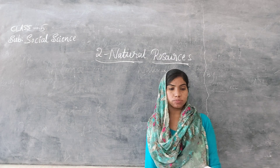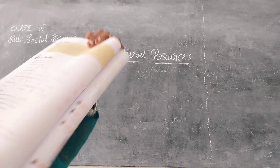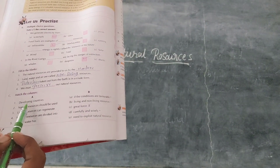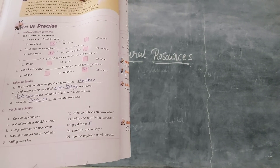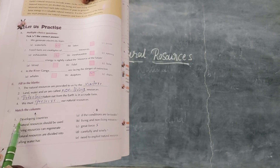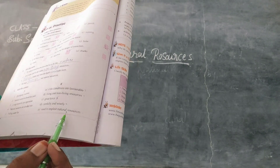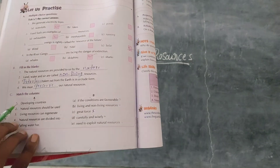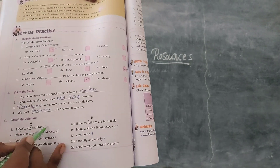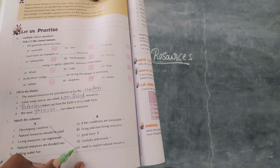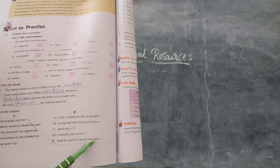Match the columns. Here they have given two columns. Read the first column and match it to the second column. The first one in the second column is 'developing countries.' Match first one to the second one. Developing countries need to exploit natural resources.